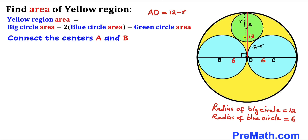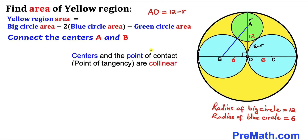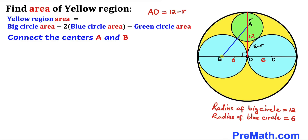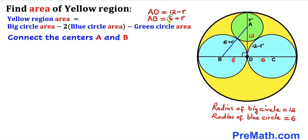Now let's connect centers A and B. Recalling that the centers and the point of tangency are collinear — centers A and B and their point of tangency lie on the very same line. The distance from B to the tangency point is the radius of the blue circle, which is 6 units, and the distance from A to the tangency point is the radius of the green circle, which is r. So the whole distance AB is going to be 6 plus r.